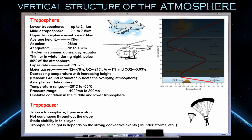The tropopause — the name itself tells us: 'tropo' means troposphere and 'pause' means stop, similar to a stop/pause button. So the tropopause is the ending of the troposphere. The tropopause is not continuous throughout the globe because the height of the troposphere varies — it is only 8 kilometers at the poles but 16 to 18 kilometers at the equator — so there are breaks in the tropopause.